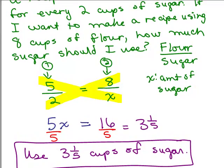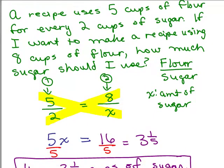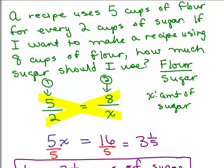Now, let's go back and see if that makes sense, 3 and 1 fifths cups of sugar. You've got 5 cups of flour using 8, so you're not really doubling the recipe. If you doubled the recipe, you'd have 4 cups of sugar, but it's not doubled. It's less than that. So 3 and 1 fifths seems like a reasonable amount to use. You should go back and see if it seems reasonable.